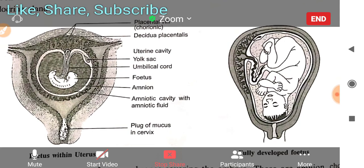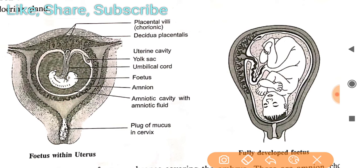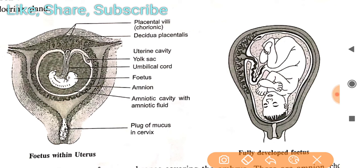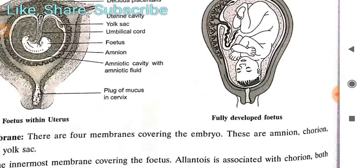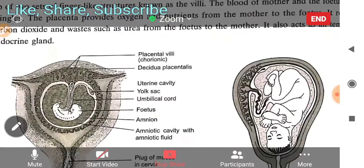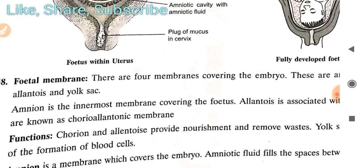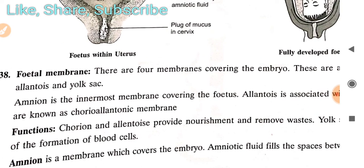You can see in the structure: the fetus within the uterus, the fully developed fetus, and the placental villi or finger-like projections. The placenta has three parts which will be discussed further when we read about fetal membranes.